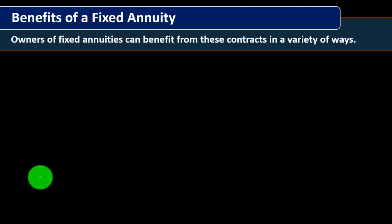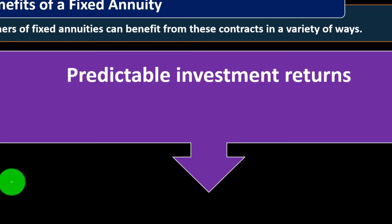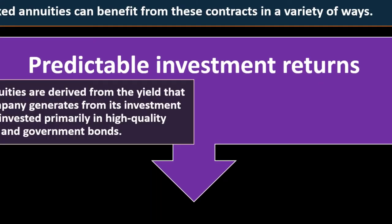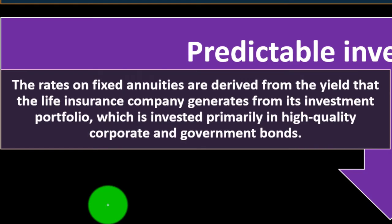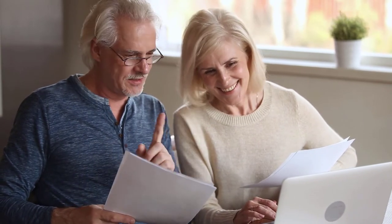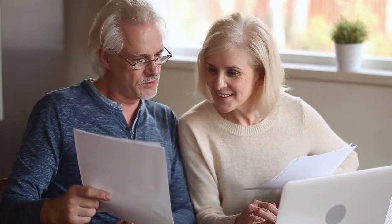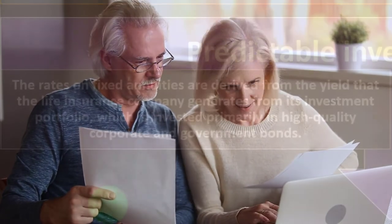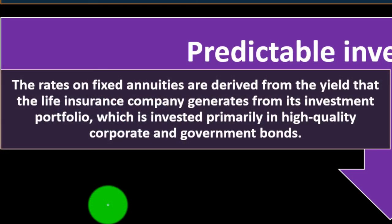Benefits of a fixed annuity: owners of fixed annuities can benefit in a variety of ways. First, predictable investment returns. This is kind of the point of the 'fixed' — it might sound bland, but you don't have variation in income, it's not tied to the market, and you're generally not going to get the highest return, but you're looking for something dependable.